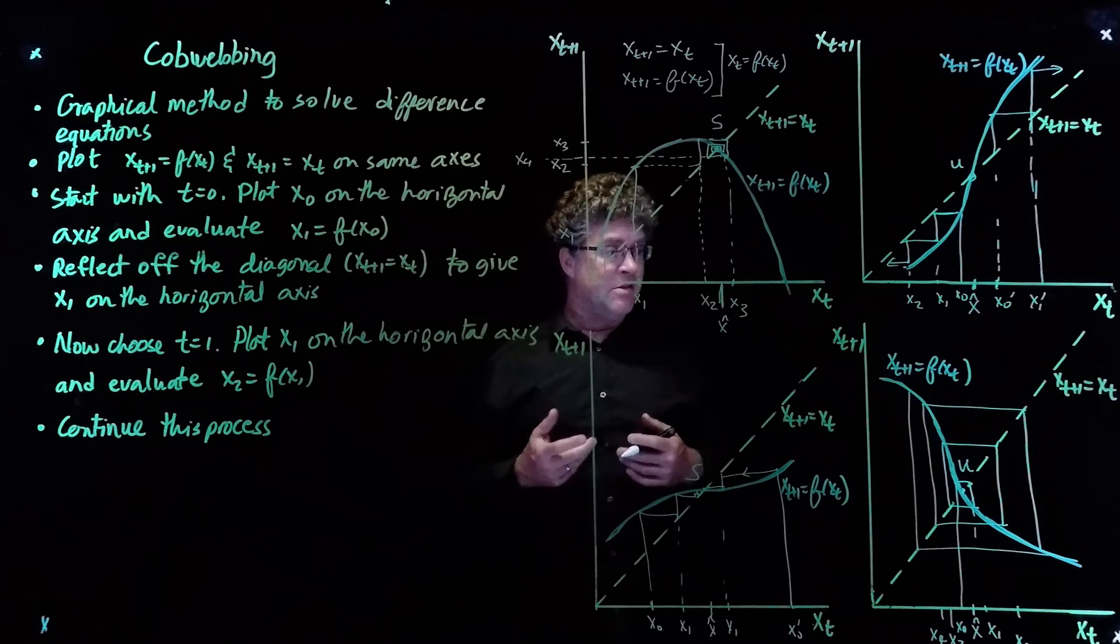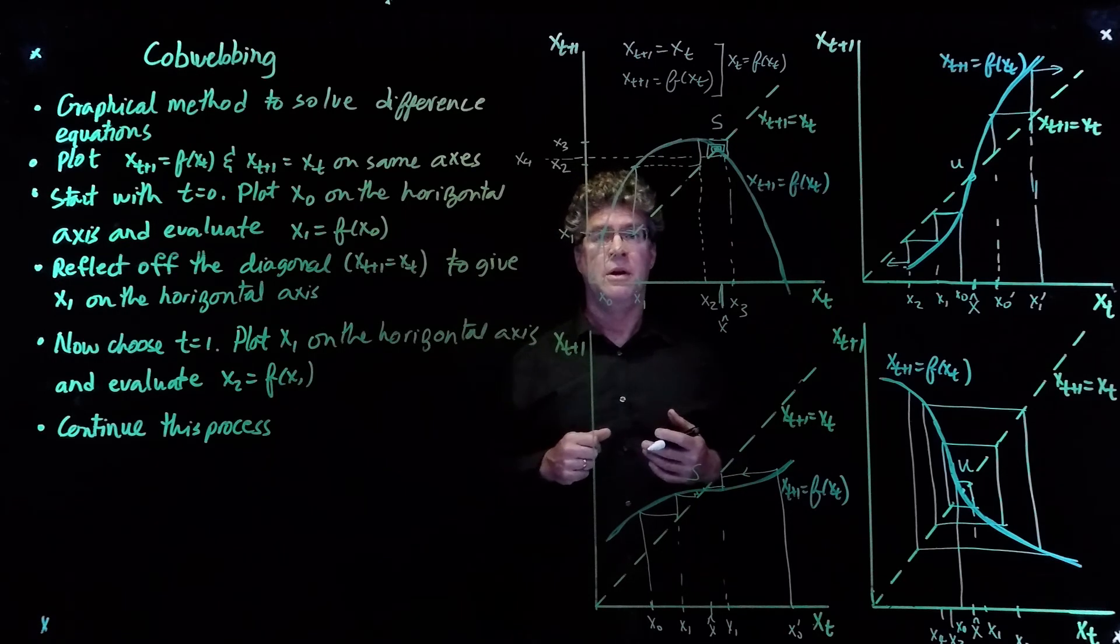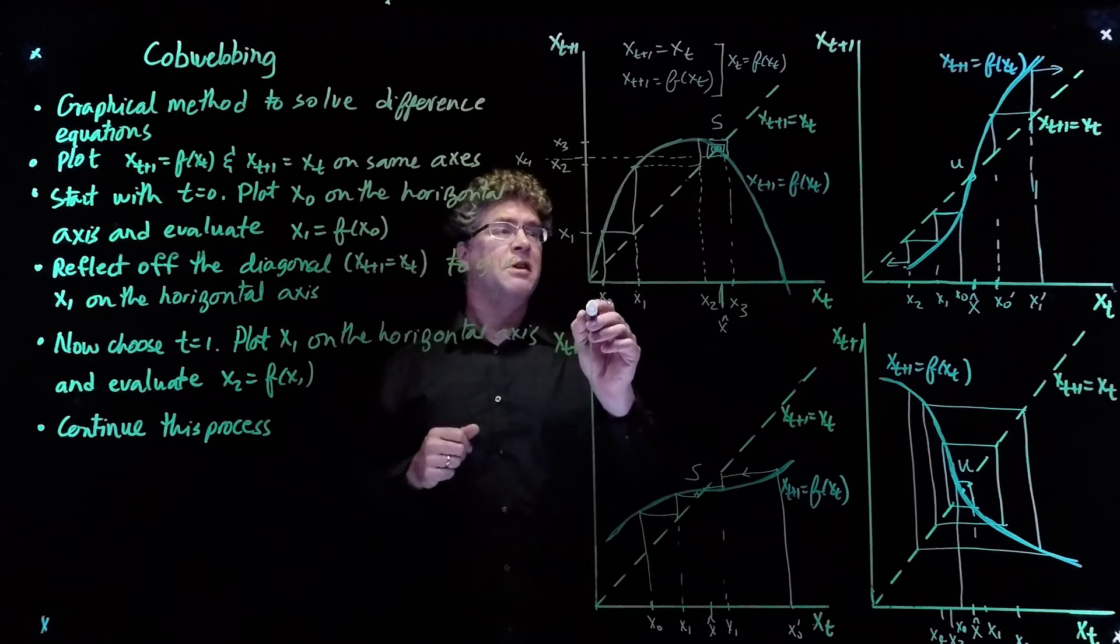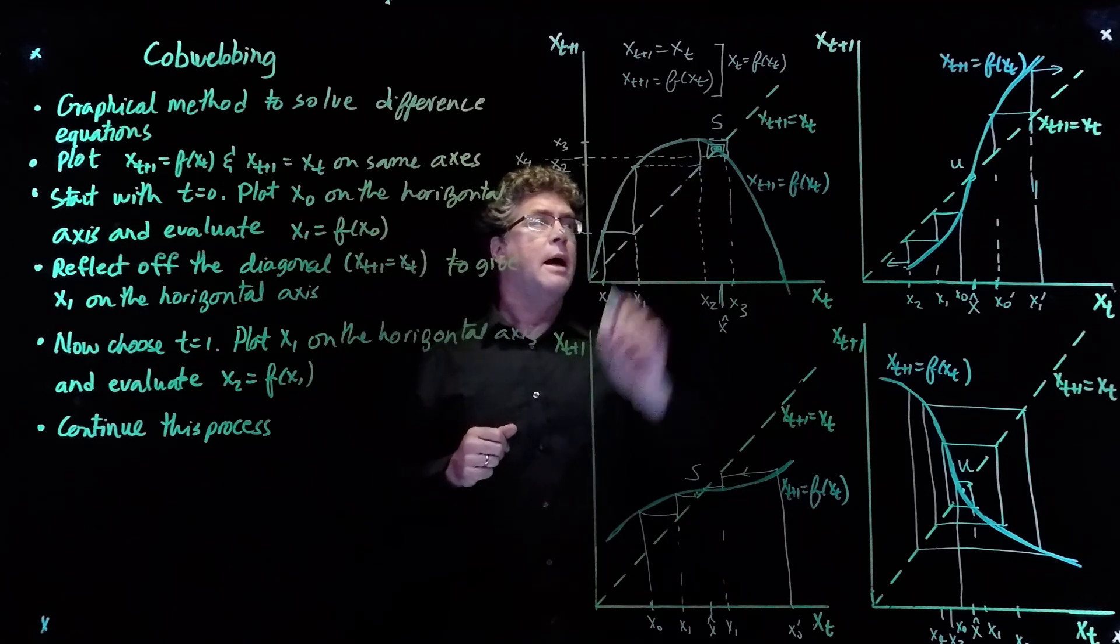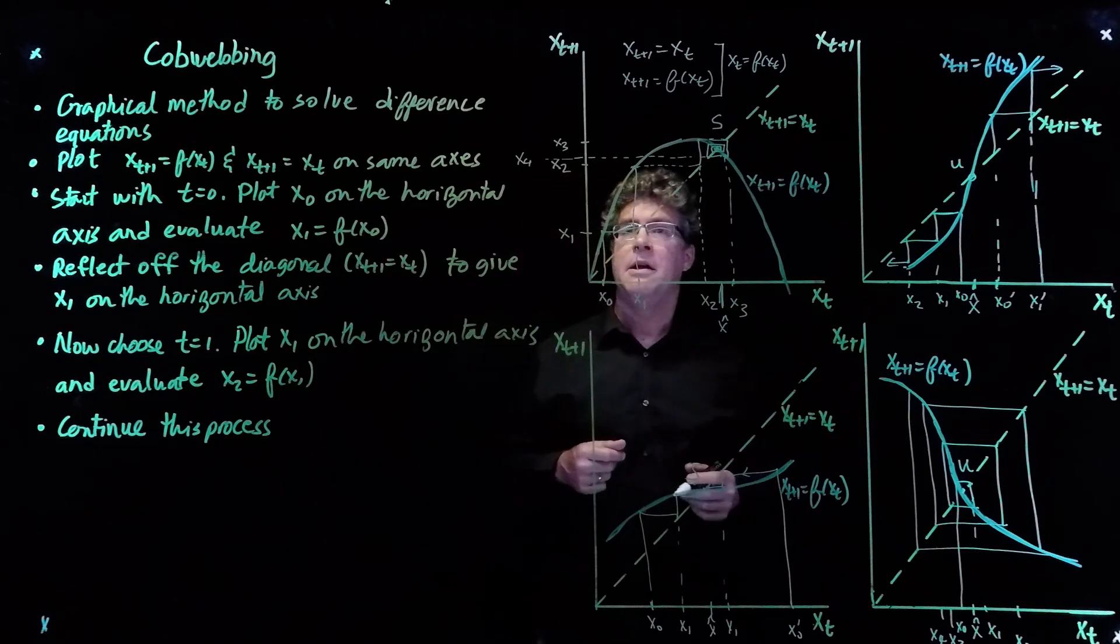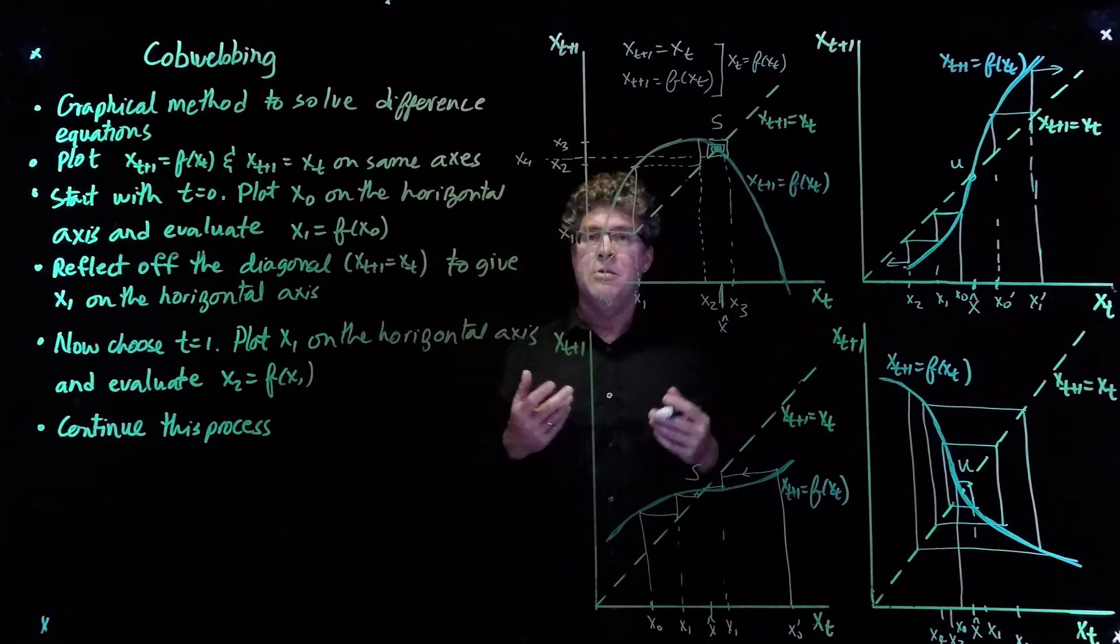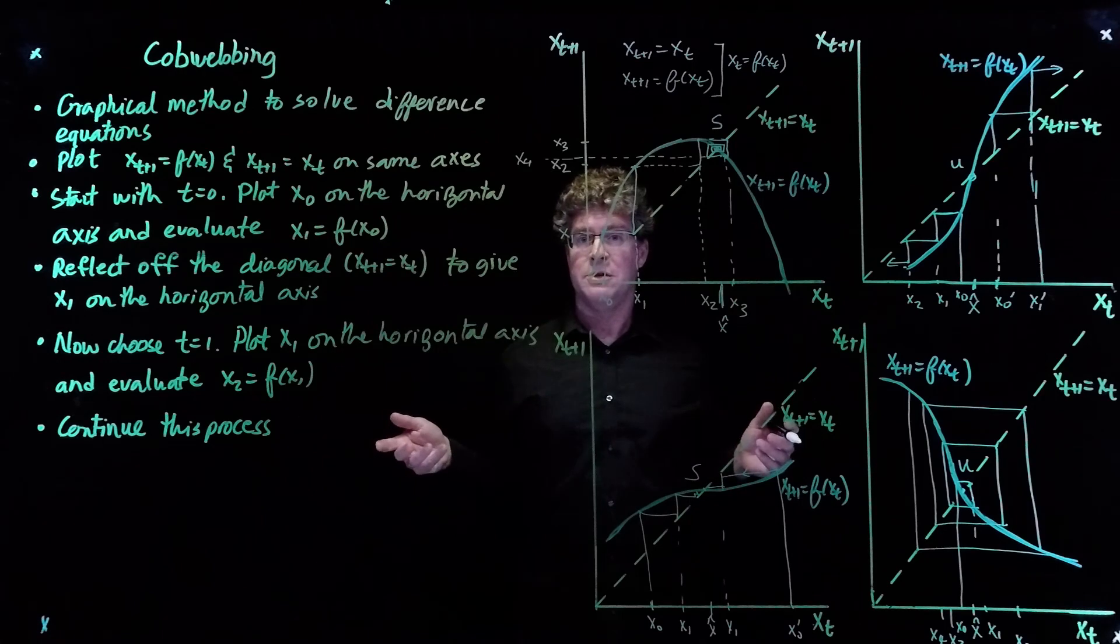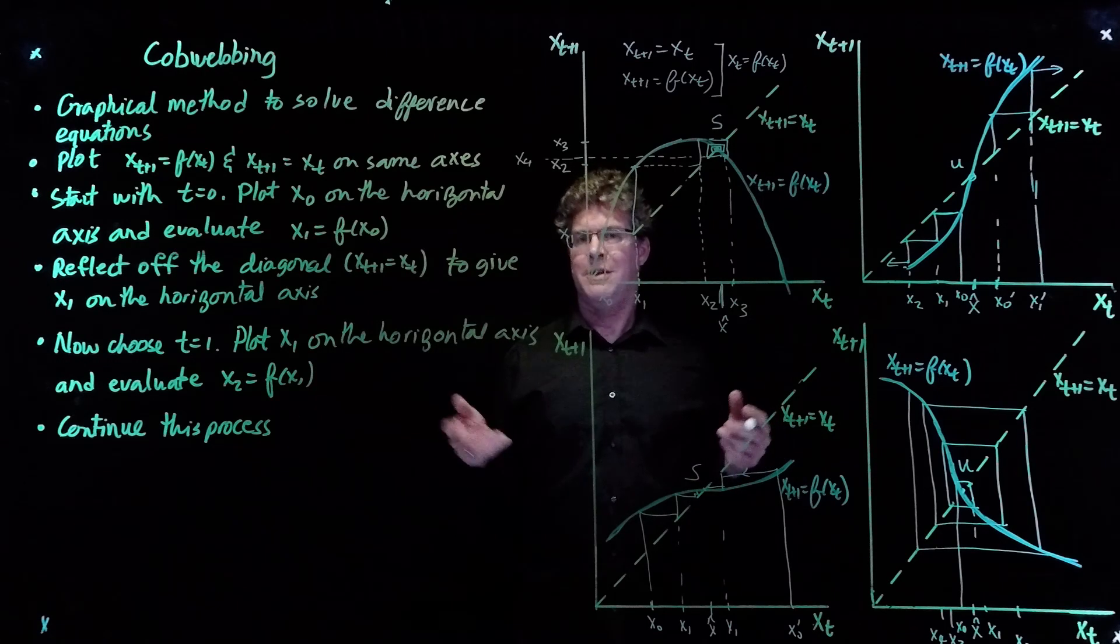So you can see there's lots of really interesting behaviors that can happen. You can move towards an equilibrium point. You can move away from an equilibrium point. You can oscillate. And all of these can be understood using the cobwebbing approach. So it can be a lot of fun.